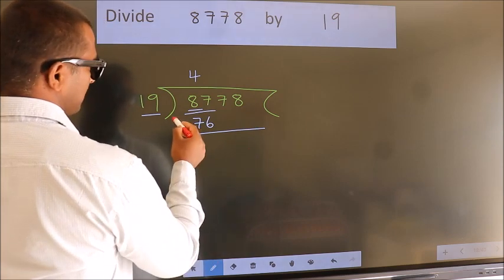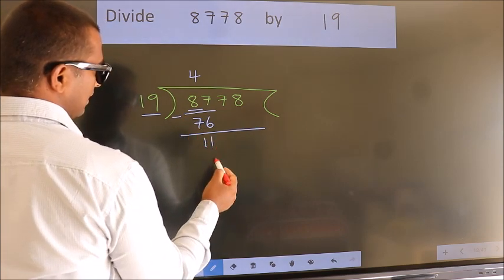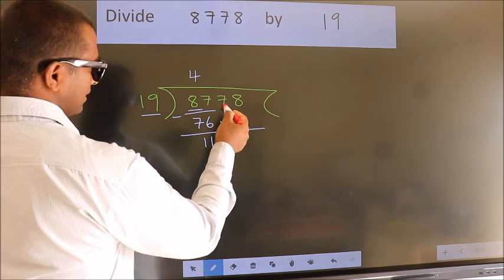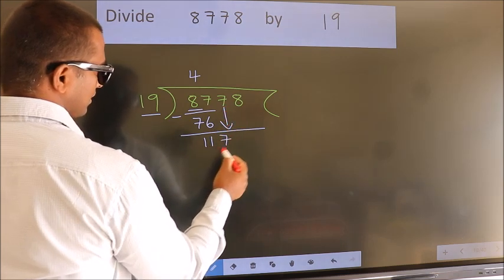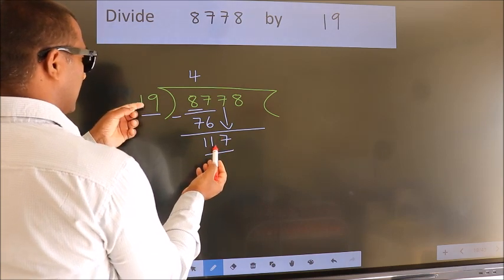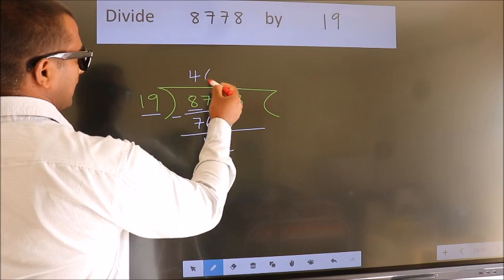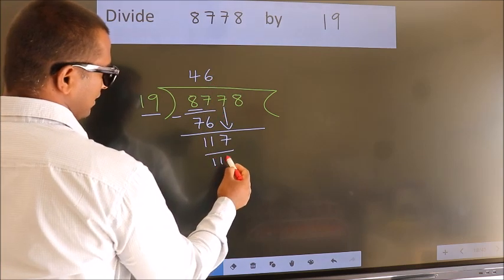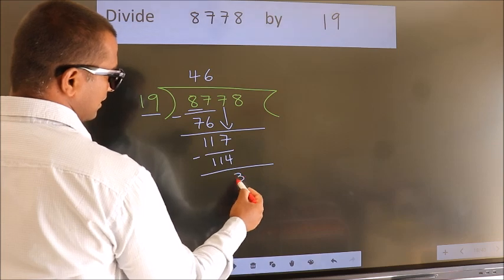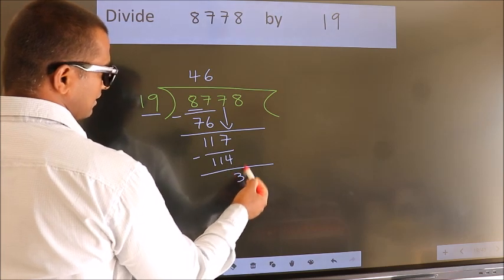Now we should subtract. We get 11. After this, bring down the next number, so 7 down, so 117. A number close to 117 in the 19 table is 19 times 6, 114. Now we subtract. We get 3. After this, bring